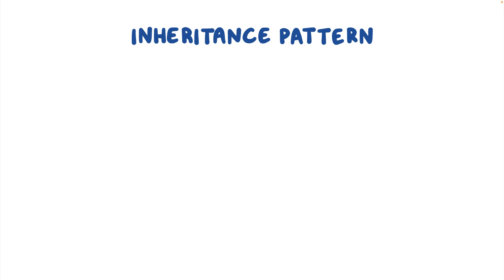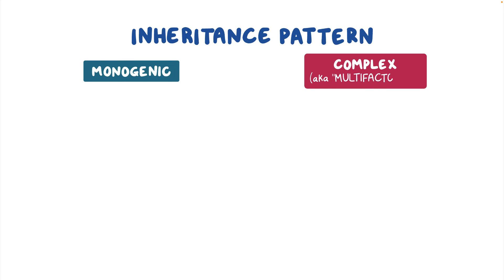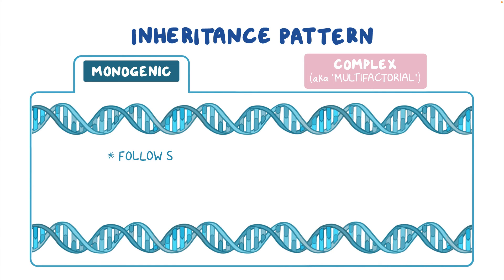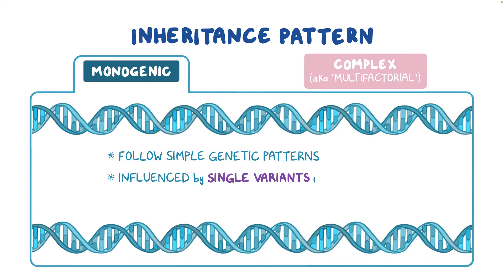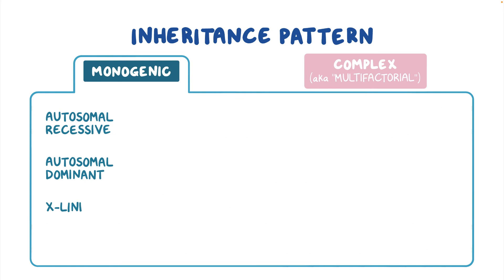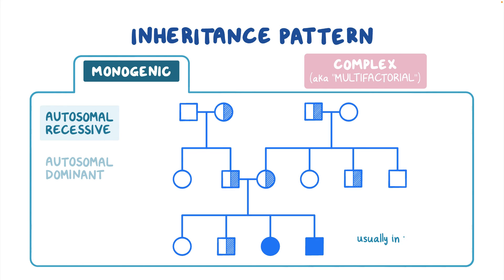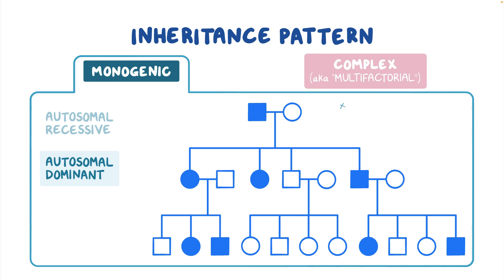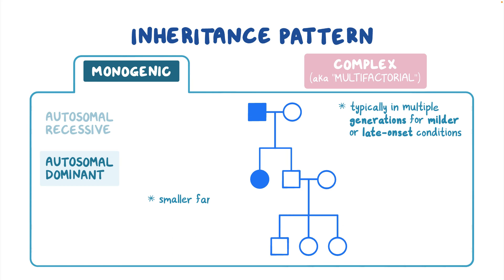Once created, a pedigree can also be used to visualize the condition's inheritance pattern, either monogenic or complex, also called multifactorial. Monogenic inheritance patterns follow simple genetic patterns and are influenced by single variants in single genes and are less influenced by non-genetic factors. There are four types of monogenic inheritance: autosomal recessive, autosomal dominant, X-linked, and mitochondrial inheritance. On a pedigree, autosomal recessive conditions usually appear in multiple individuals in a single sibship, or group of siblings, while autosomal dominant conditions are typically present in multiple generations for milder or late-onset conditions. However, smaller family sizes in the modern era may make it difficult to discern this in practice.